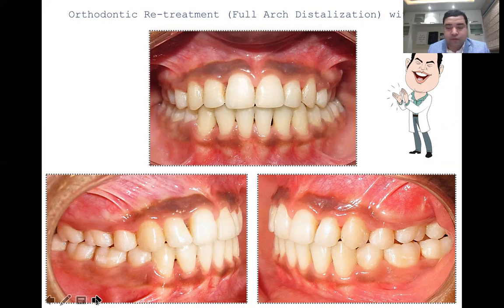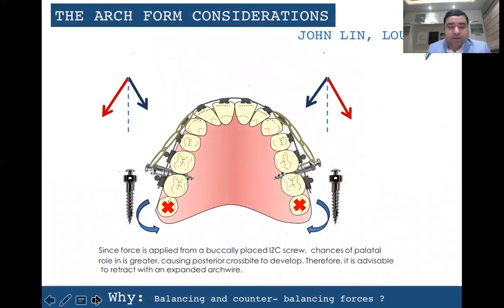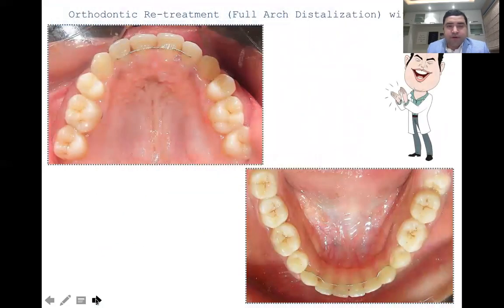The left side second molars need to settle down over time. Midlines are perfectly on and occlusion is fine. Arch form consideration is very important when treating with IZC, and the Damon arch form becomes a great advantage in bone screw cases — because there is always a chance of a posterior crossbite developing during retraction with IZC, requiring arch wire expansion during the simultaneous intrusion and retraction process. We get a good occlusion at the end of treatment. Bonded lingual retainers are in place, alignment is perfect, and the final result is far better than what she was initially given.